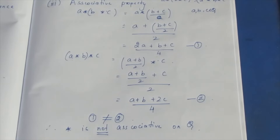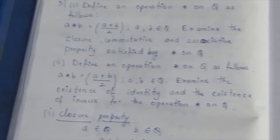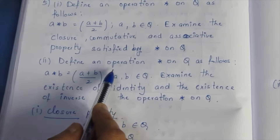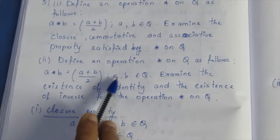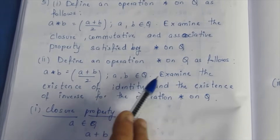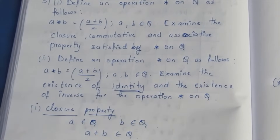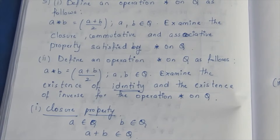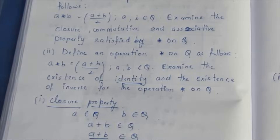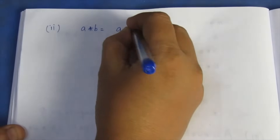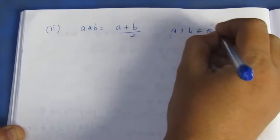Next, second subdivision: the question defines an operation star on Q as follows - a star b equals a plus b by 2, where a and b belong to Q. We need to examine the existence of an identity for the star operation and the existence of an inverse for the operation star on Q.